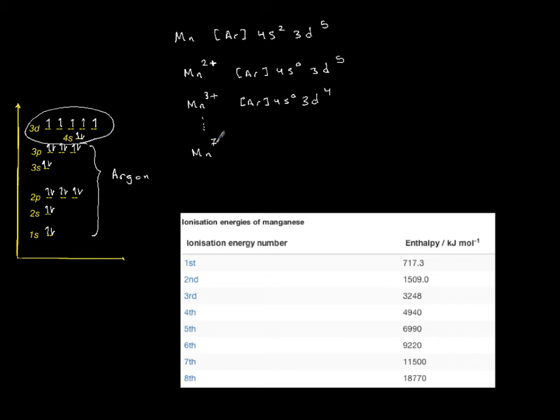Now why is that? Because 4s and 3d are very close in proximity, so you really don't need that much energy to remove them. So rather than saying 4s is my valence shell, we can say 4s and 3d collectively are valence shells.